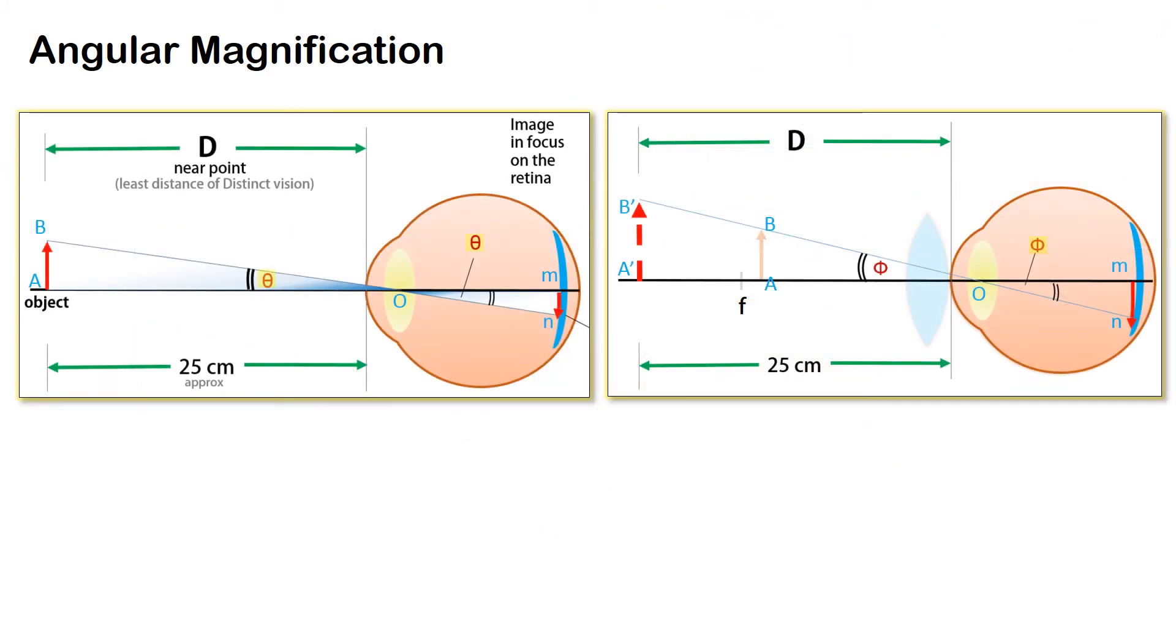We will now quantify the extent of magnification. On the left side we have an object at 25 cm from the eye and no lens. On the right hand side we have a lens and the object is kept such that the image is formed at distance d.